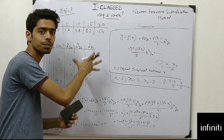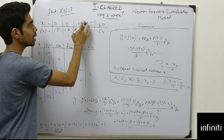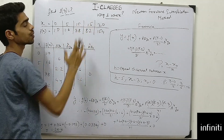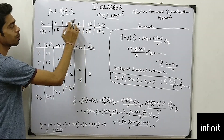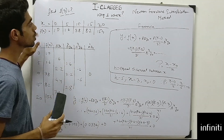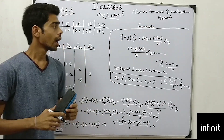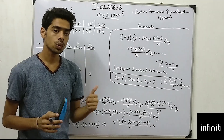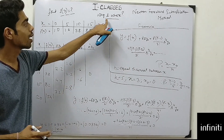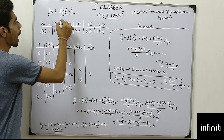Whenever you see an even integer gapping between the values of x — for example, 5 minus 0 is 5, 20 minus 15 is 5, 10 minus 5 is 5, 15 minus 10 is 5 — there is an even gapping between the x values, so you'll use Newton's Forward or Newton's Backward interpolation method. These methods are used when there is an even gapping.